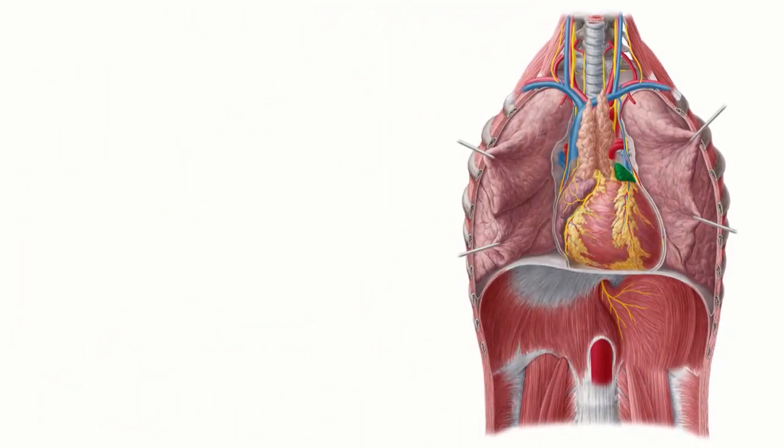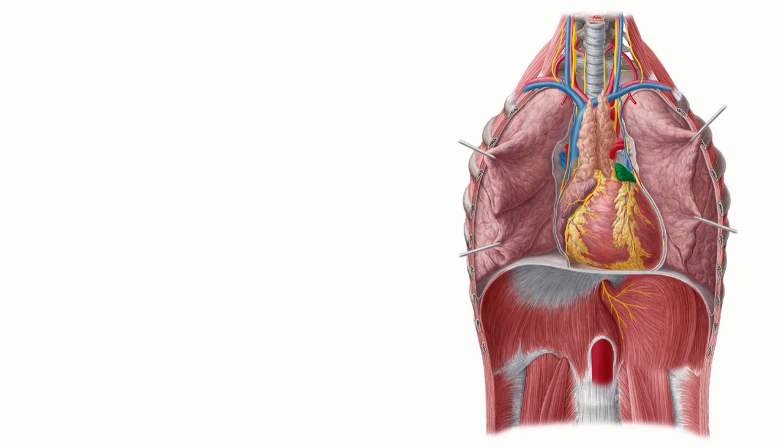The atria of the heart, which are known singularly as an atrium, are a pair of blood-collecting chambers that comprise two of the four chambers of the heart.